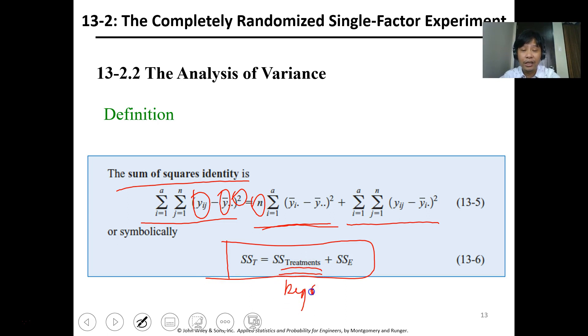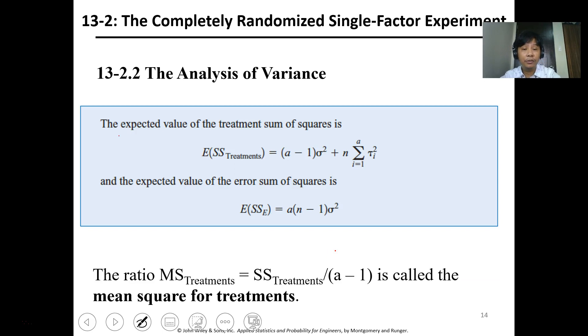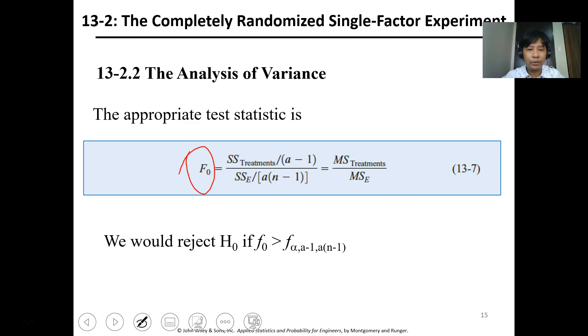We have SST equals SS treatment plus SS error. This is the regressor from our linear regression, and this is the error. The expected value of SS treatment is (a-1)σ² + n∑τ². The expected value of errors is a(n-1)σ². The ratio MS treatment = SS treatment / (a-1) is called the mean square for treatment. We use the appropriate test statistic: F₀ = MS treatment / MS error. We reject H₀ if the calculated F value is greater than the critical F value.